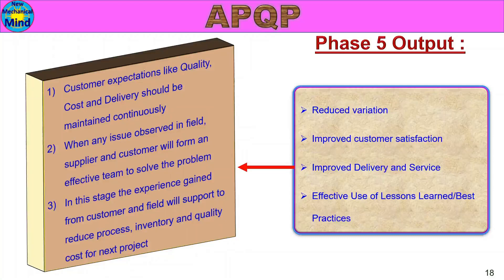Improved Delivery and Service: customer expectations like quality, cost, and delivery should be maintained continuously. When any issue is observed in the field, supplier and customer will form an effective team to solve the problem. The experience gained from customer and field will support reducing process, inventory, and quality cost for the next project. We will be able to improve on-time delivery and solve field problems. After sales, if the product has a defect, that is a warranty complaint, and the customer will be able to resolve it.